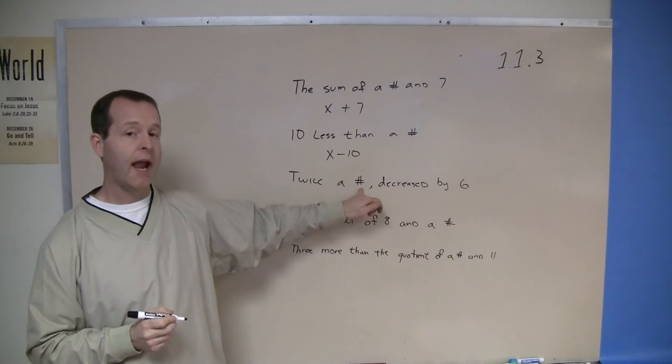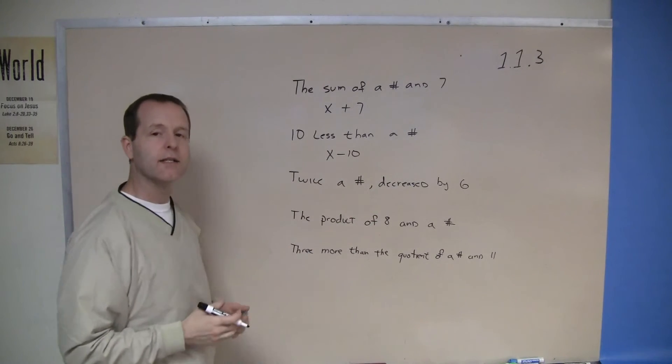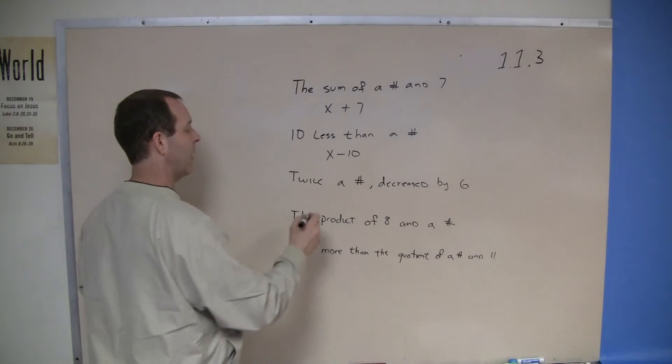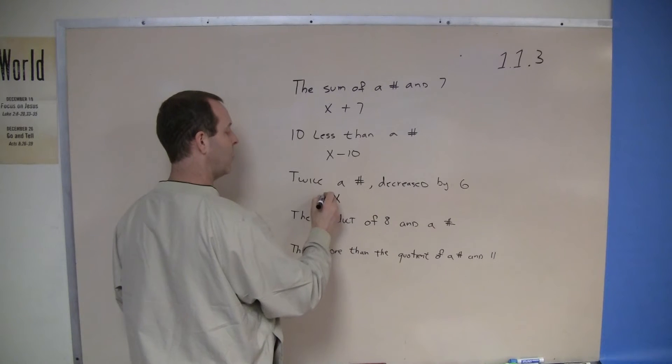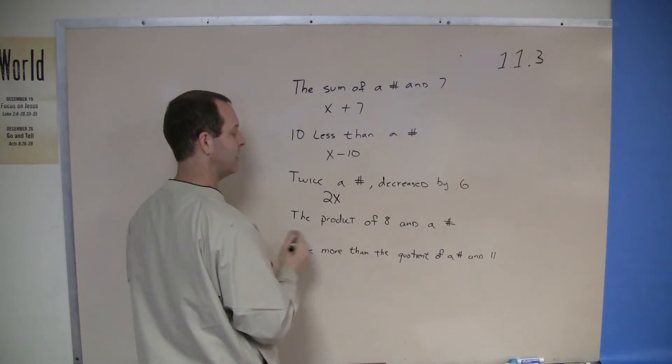Twice a number decreased by six. Well, some number twice - double that number, times that number by two. So I have some number and I want it twice. So it's two times that number, decreased by six.